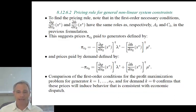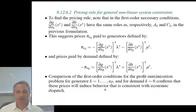Prices paid by the demand are defined by minus PI_K_X0, which is given by DG/DX_K transpose lambda* plus DH/DX_K transpose mu*. Note: in a previous video there was a typo — it should have been minus PI as the price paid by demand. Comparing the first order conditions for profit maximization with the ISO economic dispatch conditions confirms that these prices induce behavior consistent with economic dispatch.